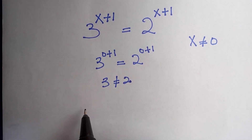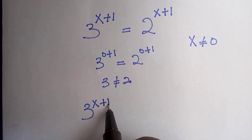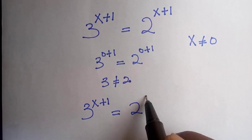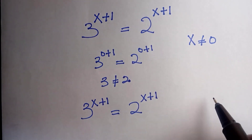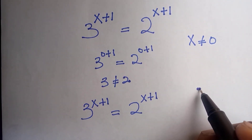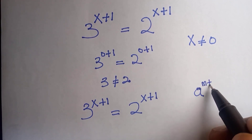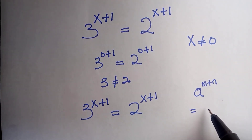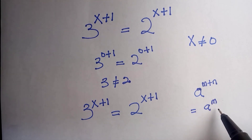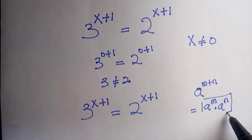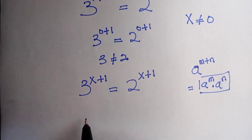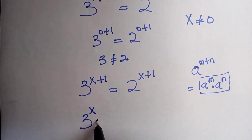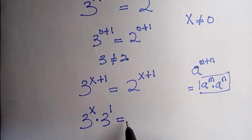Alright, let's see the way of solving this. If we have 3 raised to the power of x plus one equals 2 raised to the power of x plus one, let's consider this law of indices: if you have a raised to the power of n plus m, you can split it to be a raised to the power m times a raised to the power of n. Applying this rule here, we get 3 raised to the power of x times 3 raised to the power of 1 equals 2 raised to the power of x times 2 raised to the power of 1.